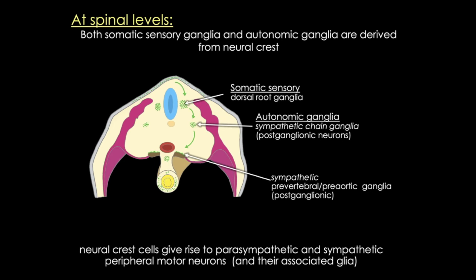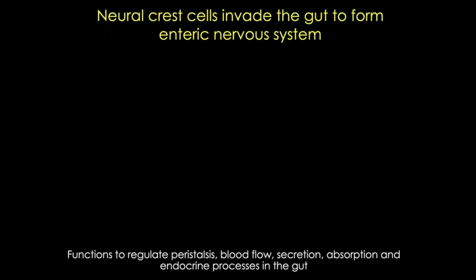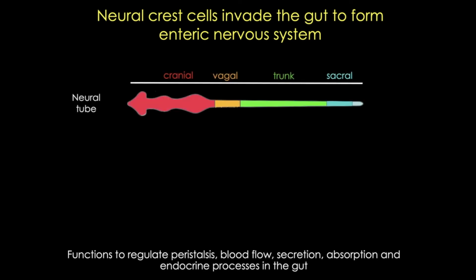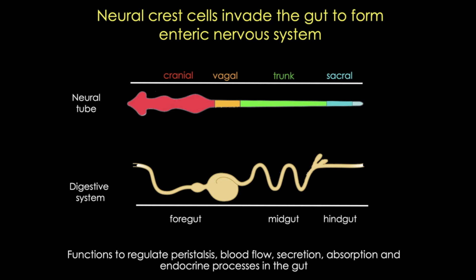The enteric nervous system is composed of reflex pathways that control digestive functions of muscle contraction and relaxation, secretion, absorption, and blood flow. It can act independently of the central nervous system and the PNS. In this cartoon, the neural tube is color-coded with the rough locations of different neural crest cell populations, and the digestive tract below shows the regions — foregut, midgut, and hindgut. Beginning at the end of week four, neural crest cells migrate and form nerve plexi in the gastrointestinal tract: vagal population cells form the enteric system within the foregut and midgut, and a few migrate into the hindgut as well, while the lumbar sacral crest primarily populates the hindgut.